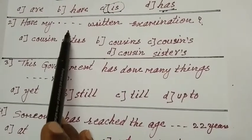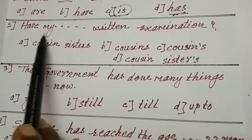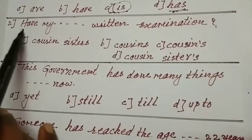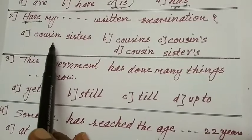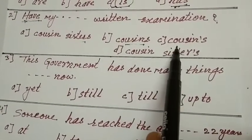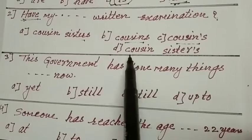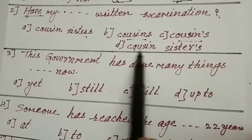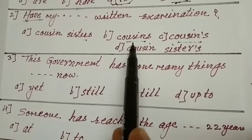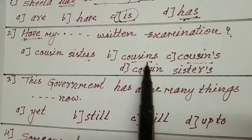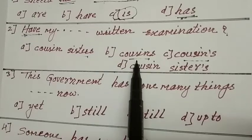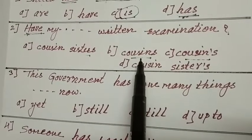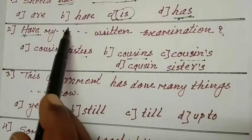How my dash written examination? My cousin sister's or cousins. Cousin means one person. Boy or girl, feminine gender and masculine gender. Cousins is the answer. The answer is B, cousins. Next one.